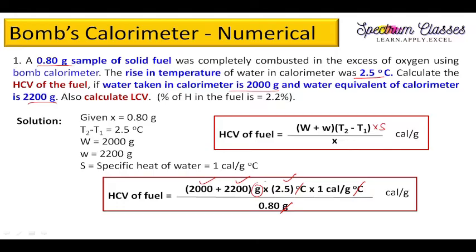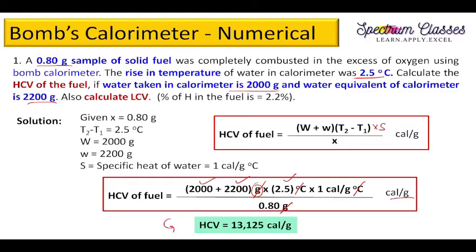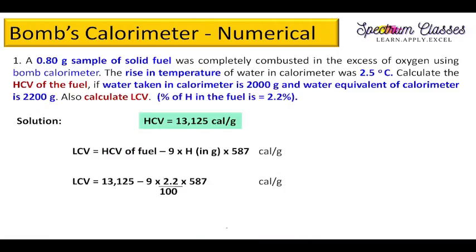The degree centigrade cancels with degree centigrade, and grams cancel with grams, giving us calories per gram. On solving, we get the HCV in calories per gram. Note: some texts may ask for GCV (gross calorific value) or HCV (high calorific value) — both are the same.